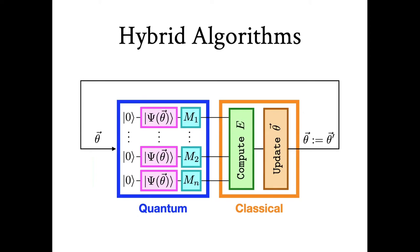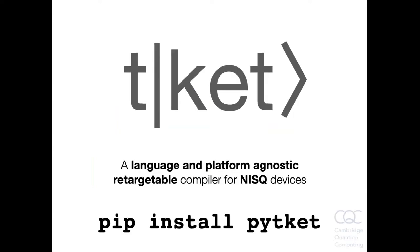So as Patrick explained very nicely at the beginning of his presentation, we actually use these machines as variational algorithms. And so these are the kind of algorithms which the TKET compiler is designed to handle. So this is the name of it. It's called TKET. It is language and platform agnostic. It's retargetable, and it's designed for NISQ devices. So it's available free of charge for non-commercial use. And you can get it from PyPI by typing the command shown at the bottom of the slide.